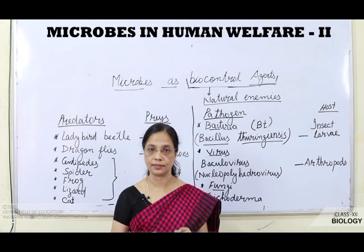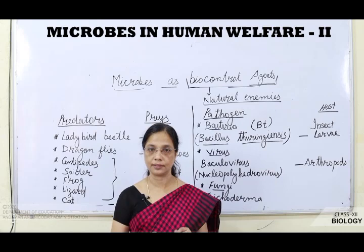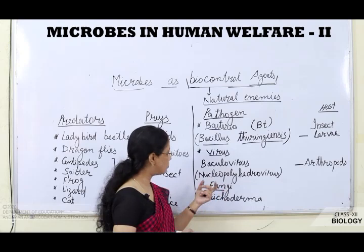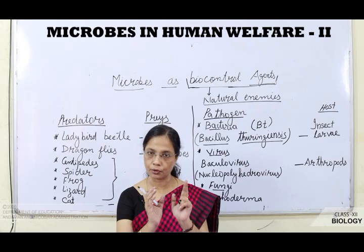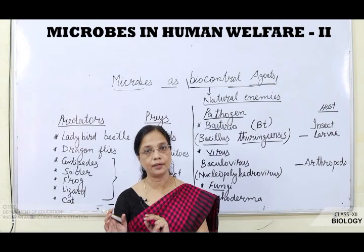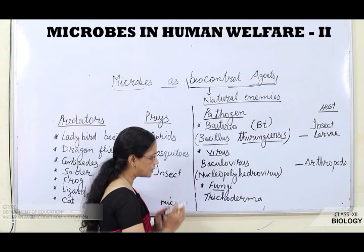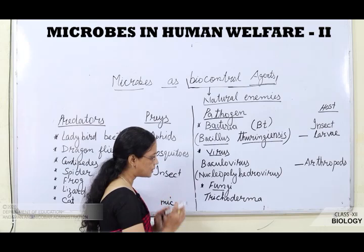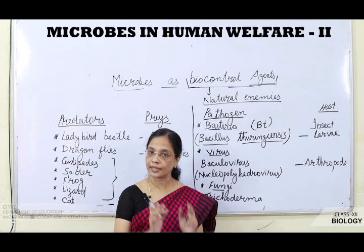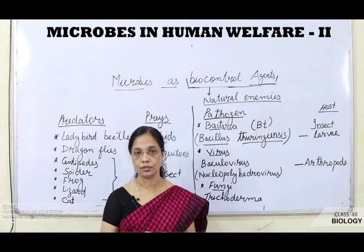Next, there is a group of viruses known as baculoviruses that also act as biocontrol agents. These come under the genus Nucleopolyhedrovirus. They attack arthropods and are species-specific — they attack only particular types of species without damaging any other organisms. Additionally, a fungus called Trichoderma, found in the root ecosystem, protects plants from various types of pathogens.